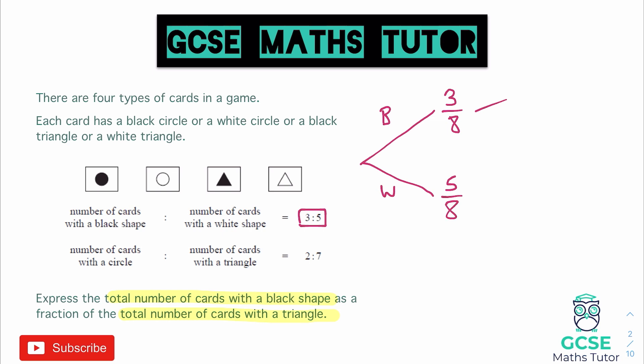It then splits off into circles and triangles. So if we split that off, we've got circles and triangles, circles and triangles, and we can get that from this ratio here, and that's two and seven. So that's nine in total. So circles is two out of nine, and triangles is seven out of nine, and that's going to be the same just below.